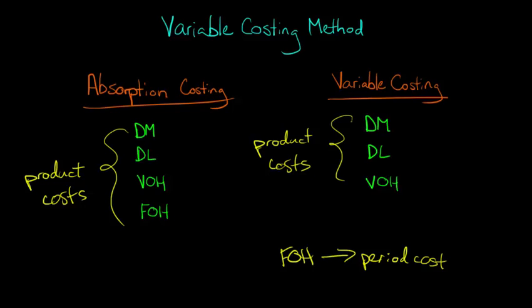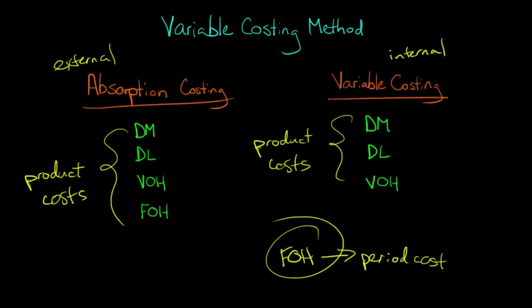Just a brief aside: absorption costing is used for external purposes, which means variable costing exists more because it's useful for internal purposes — for decision making by managers. We're going to get into why this subtle difference of treating fixed overhead as a period cost is actually better for internal decision making. But first, let's walk through our example.